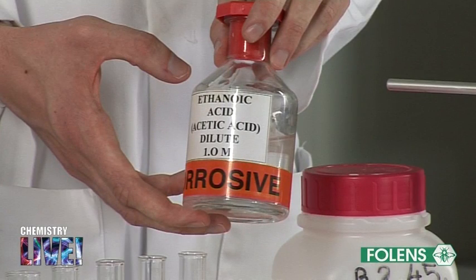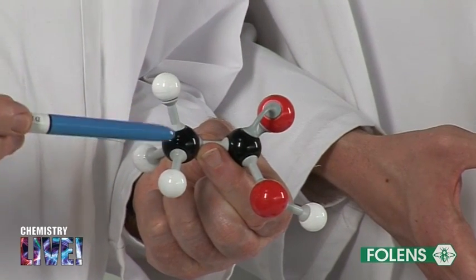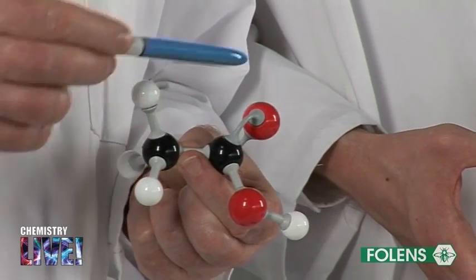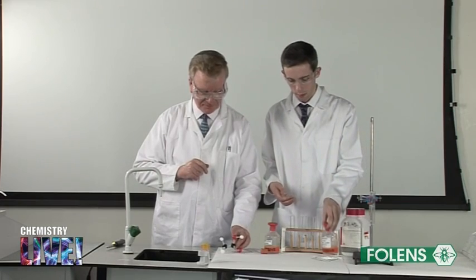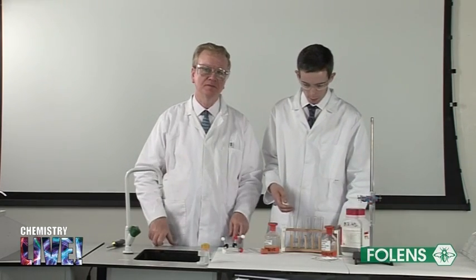Ethanoic acid is a far weaker acid than the common inorganic acids such as sulphuric acid, hydrochloric acid and nitric acid, however it is strong enough to show some typical properties of acids.